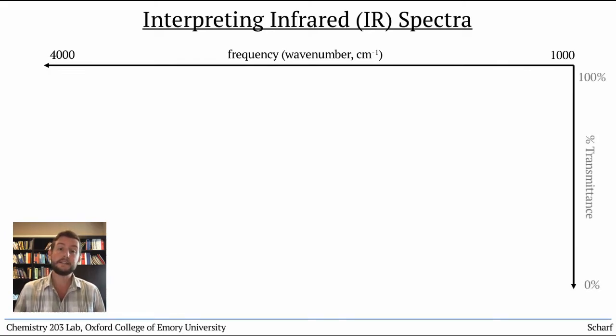The y-axis is typically percent transmittance, which means that when a compound absorbs a particular frequency of light, you'll see a dip in the spectrum. Even though it's flipped upside down, we still refer to these as peaks.